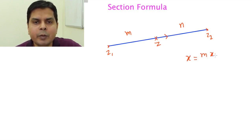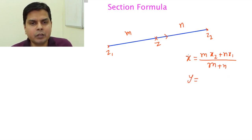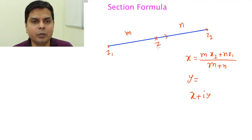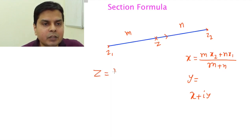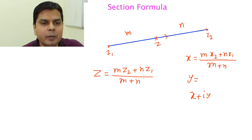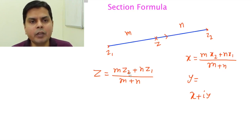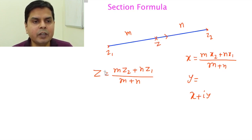The x-coordinate is given by x = (m·x2 + n·x1) / (m + n), and similarly for y. Since the same formula applies for both x and y, if I write x + iy, the same formula will apply for z also. So I can write z = (m·z2 + n·z1) / (m + n). There is nothing new in this formula — it is exactly the same as the coordinate geometry formula for x and y, now applied to complex numbers.